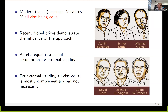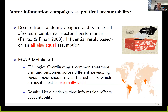Making internally valid causal inferences is really valuable, and we should definitely strive to do that. But for external validity, 'all else equal' is mostly complementary, but not necessarily sufficient. External validity is important because we really want to figure out whether our inferences are contributing to broader learning. Our running example for today is the MediCata 1 study, and there was a very famous study from Faras and Finan in 2008 examining whether randomly assigned audits in Brazil affected incumbents' electoral performance — they found that it did.